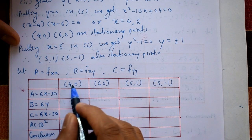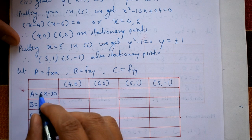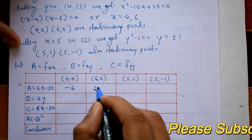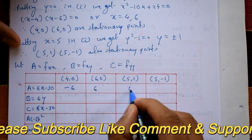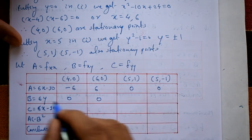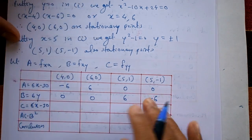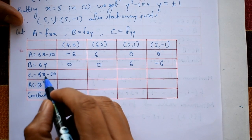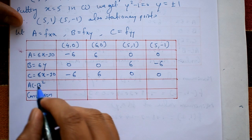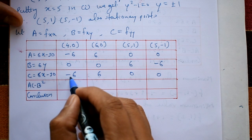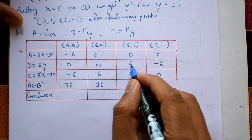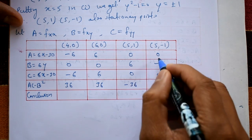Now substitute the stationary points into a, b, and c. At (4,0): a = 24 - 30 = -6, b = 0, c = -6. At (6,0): a = 36 - 30 = 6, b = 0, c = 6. At (5,1): a = 0, b = 6, c = 0. At (5,-1): a = 0, b = -6, c = 0.